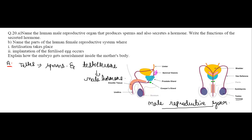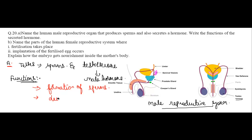Now let's see the functions of the male hormone, Testosterone. Testosterone helps in the formation of sperms. It also helps in the development of secondary sexual characters. So these are the functions of the hormone called Testosterone.